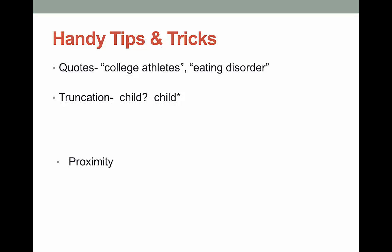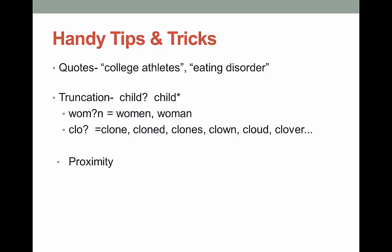Different databases have different symbols — just look in their help section. You can also use a symbol within a word to find variations like woman or women. Just be careful not to over-truncate a word. Anything less than four letters tends to bring up too much. Trying to truncate clone to C-L-O with the symbol will bring up a bunch of words not at all related to clone or cloning.